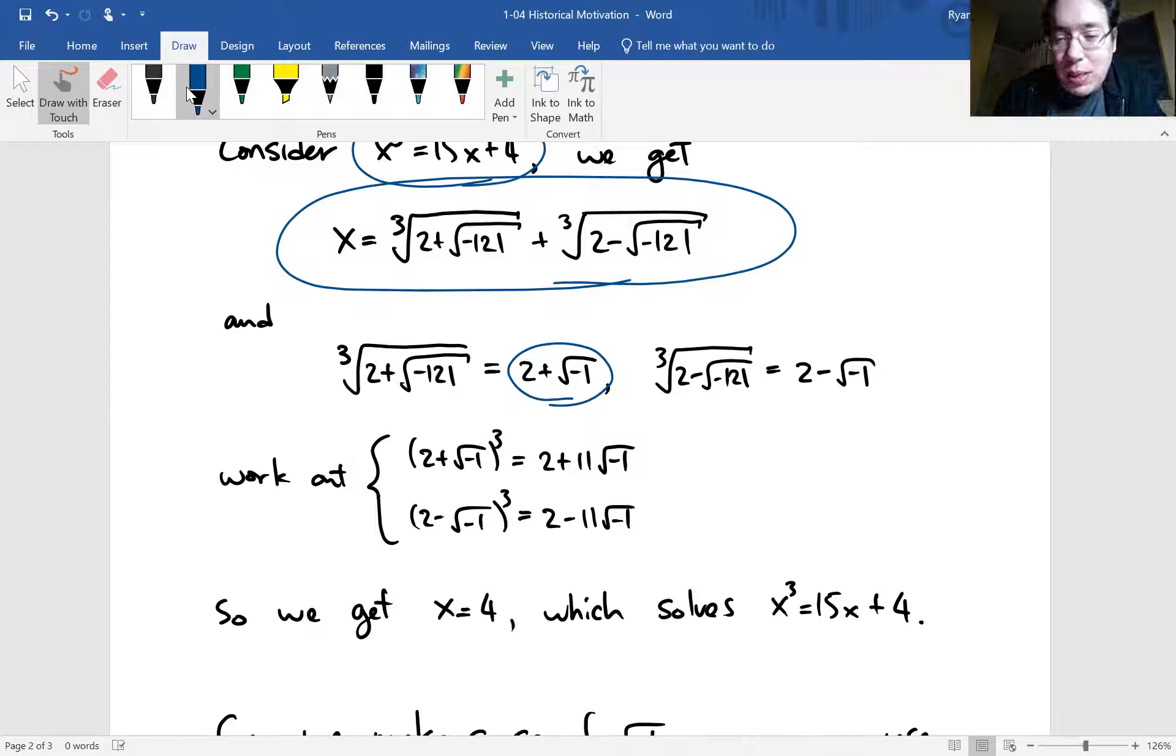But he actually worked out that this cube root of 2 plus square root of negative 121 could be simplified to 2 plus the square root of negative one. So this is going to turn into i, but square root of negative one there and cube root of 2 minus square root of negative 121. So this is going to simplify down to this. Well, how do you determine that this is how we simplify? Well, you kind of go backwards. If you take 2 plus square root of negative one and multiply them all out, right?